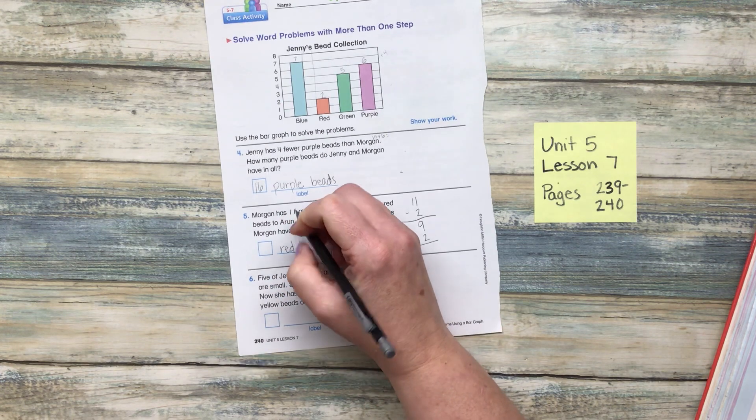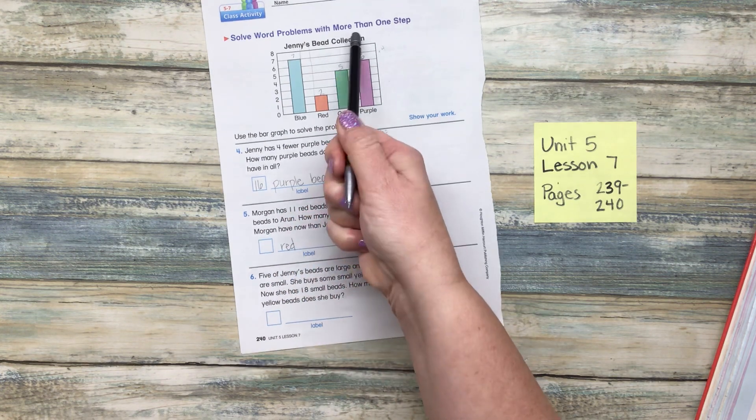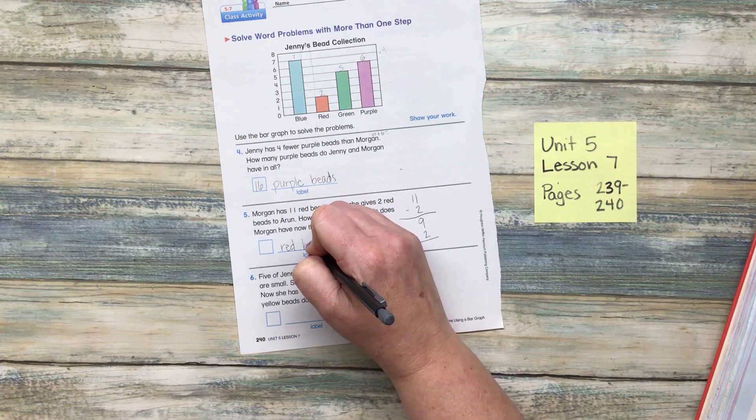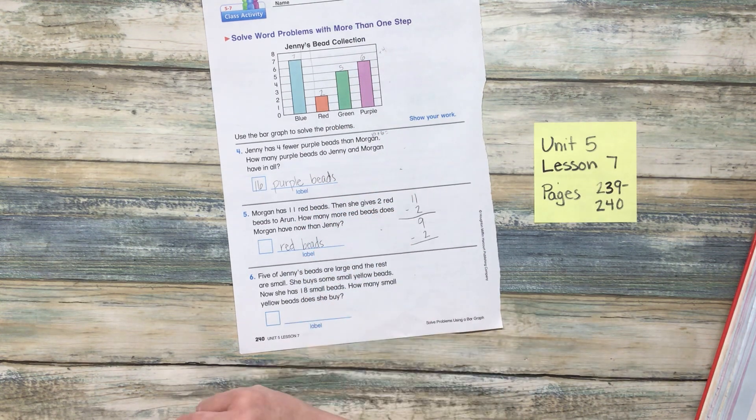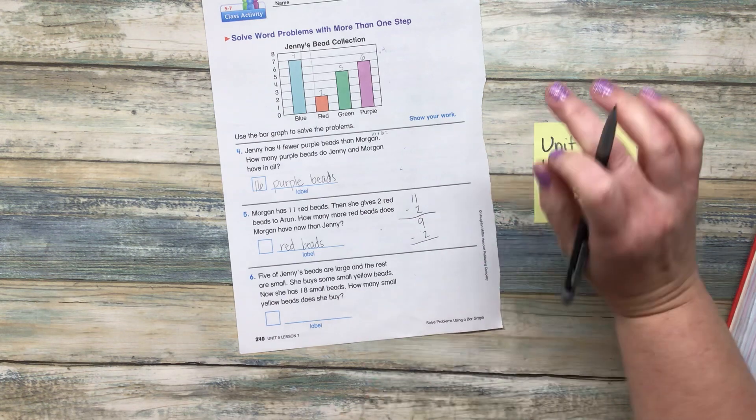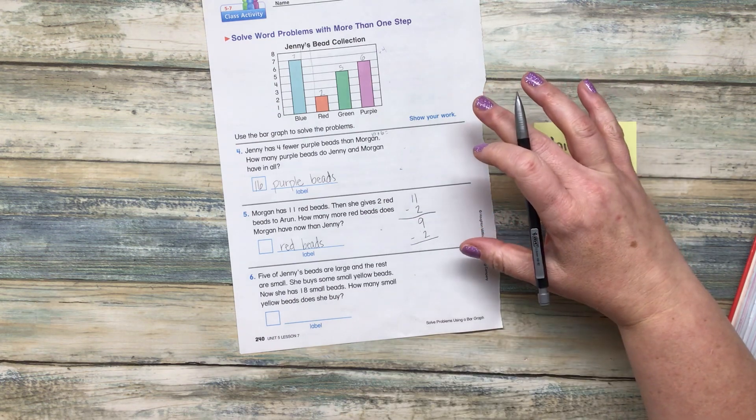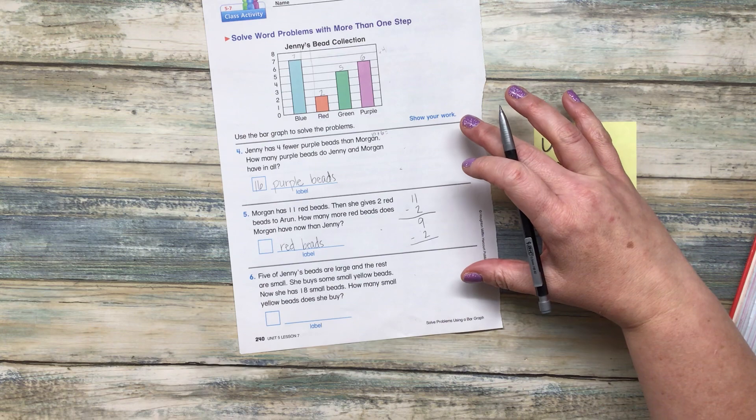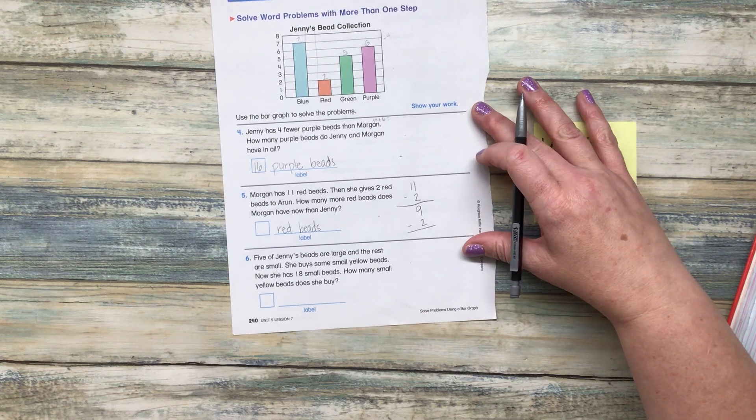So these are problems with more than one step there. I didn't even tell you that. We just started doing it. So how many more red beads does Morgan have than Jenny? All right. The last one.